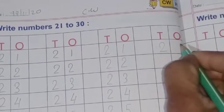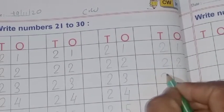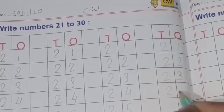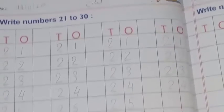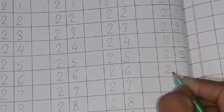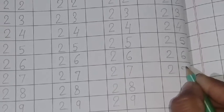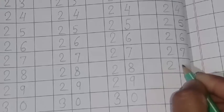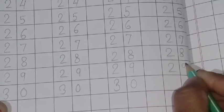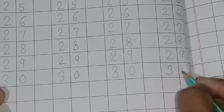21 to 21, 22 to 22, 23 to 24, 25 to 26, 27 to 28, 29, and 30. Okay.